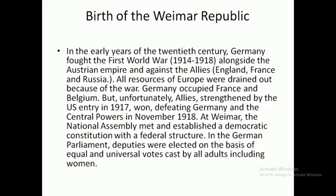The Weimar Republic was a political organization in Germany. In the early years of the 20th century, Germany participated in the First World War alongside the Austrian Empire and against the Allied powers like England, France, and Russia. The First World War took place in 1914 and came to an end in 1918.